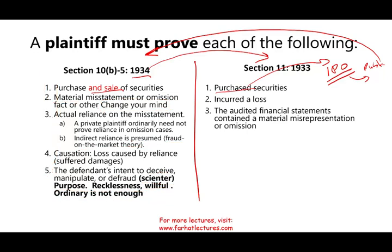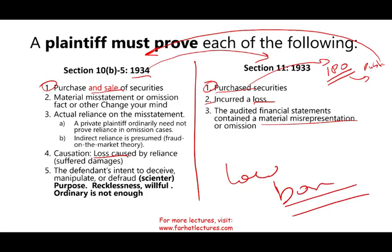What are the similarities? Both require that you purchased the stock — if you did not purchase the stock, you have no claim against anyone. You incurred a loss — if you did not incur a loss, you don't have a case. Under the 1933 Act, all you have to show is that the financial statement contained a material misstatement or omission. You don't have to show reliance, or that the auditor was trying to deceive you, or that they were negligent. It's a very low bar, so they can easily sue you under the 1933 Act.